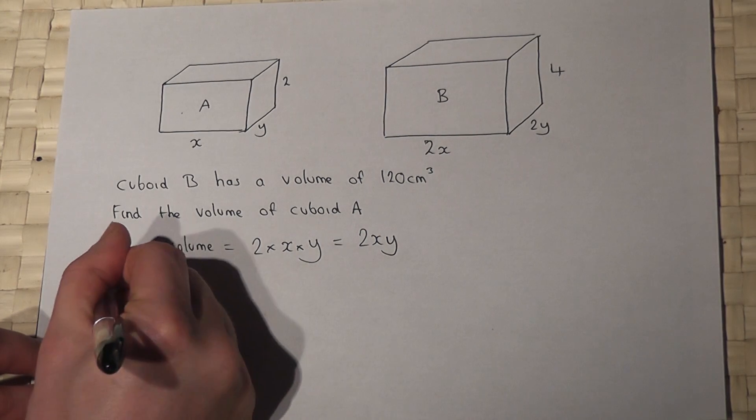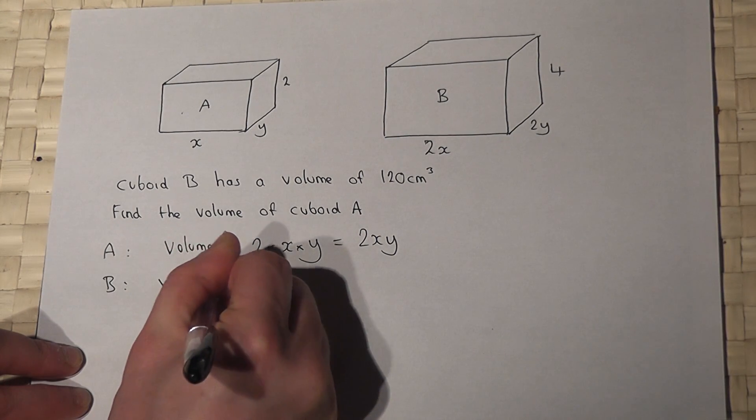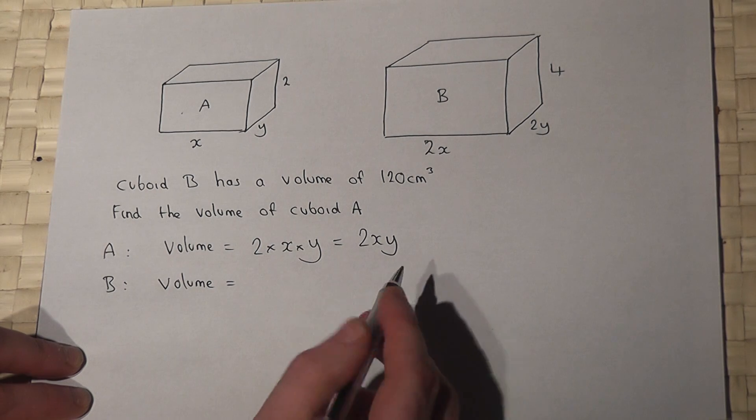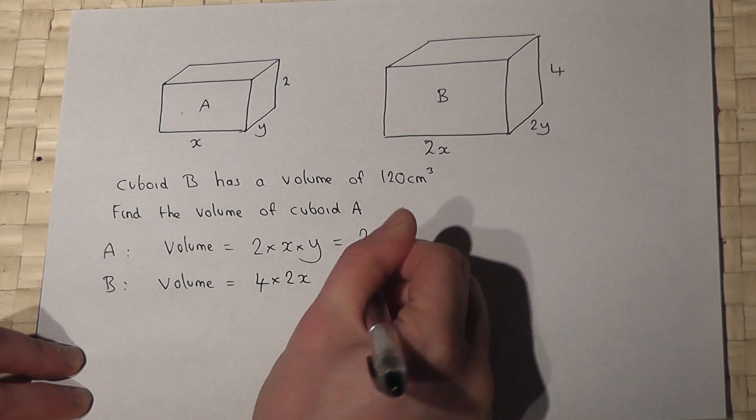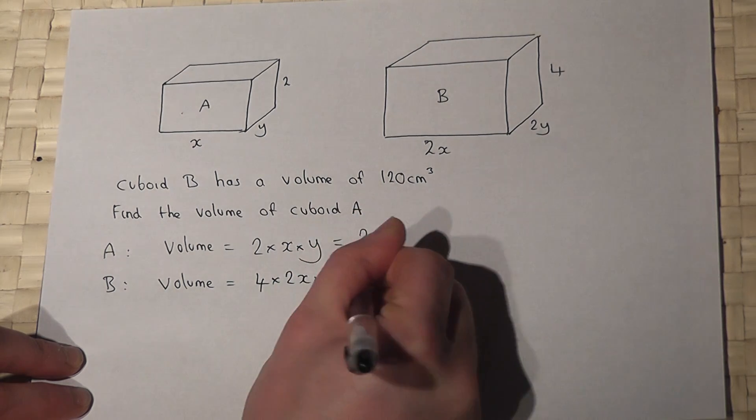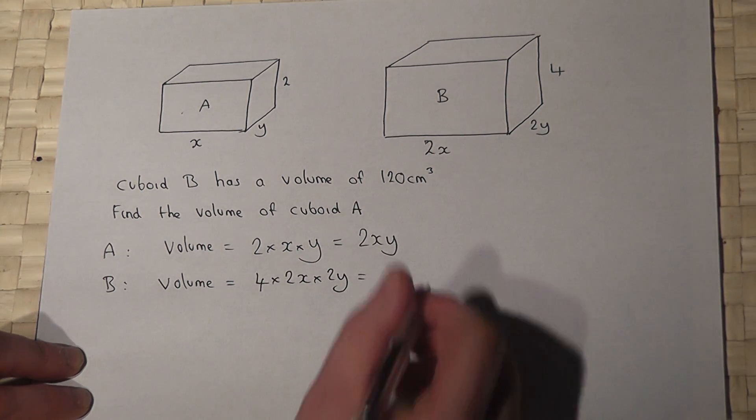If we work out the volume of cuboid B, that will be 4 times 2x times 2y. 4 times 2 times 2 is 16xy.